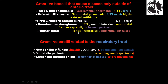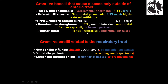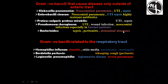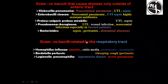Bacteroides causes peritonitis — inflammation of the peritoneal membrane (abdominal inflammation) — and abdominal abscess formation in the abdominal cavity.